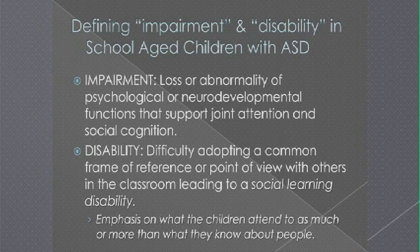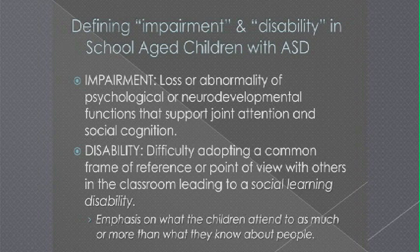So when we talk about the impairment in autism, a major one is this loss or abnormality of the joint attention system, which does have a neurodevelopmental support system. Children have difficulty adopting a common frame of reference, regardless of IQ — that's a fairly common component of autism. The emphasis here is no longer on what children think about but what they pay attention to. It's not just thinking about other people's thoughts — it's paying attention to what other people are attending to. That's really problematic in the classroom or in any social or communication interaction.